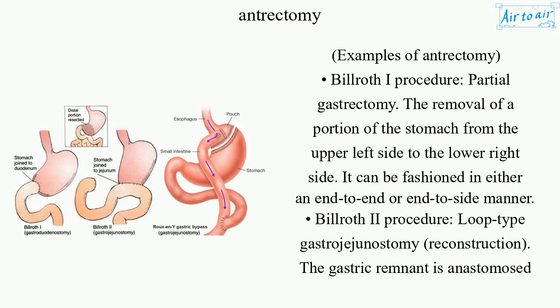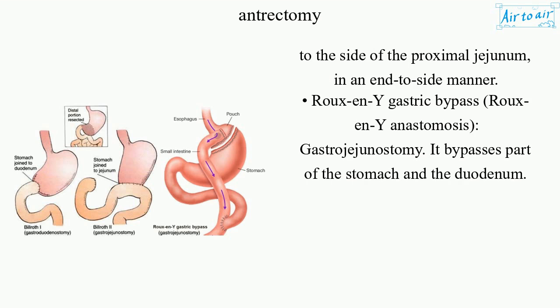Billroth II procedure: loop-type gastrojejunostomy reconstruction. The gastric remnant is anastomosed to the side of the proximal jejunum in an end-to-side manner.